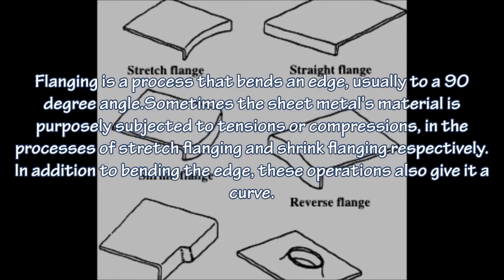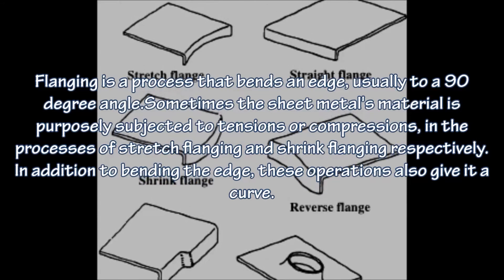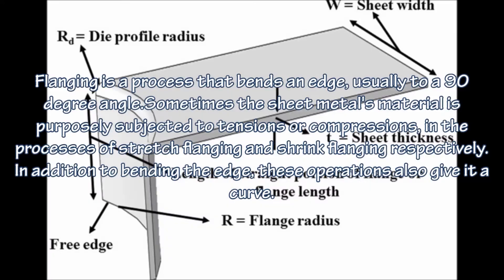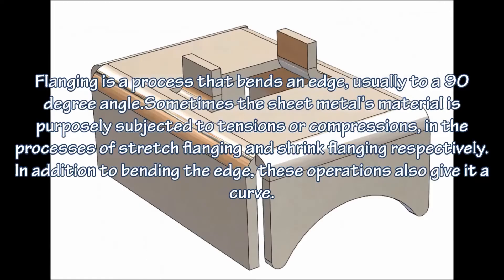Flanging is a process that bends an edge, usually to a 90-degree angle. Sometimes the sheet metal material is purposely subjected to tensions or compressions in the processes of stretch flanging and shrink flanging respectively. In addition to bending the edge, these operations also give it a curve.